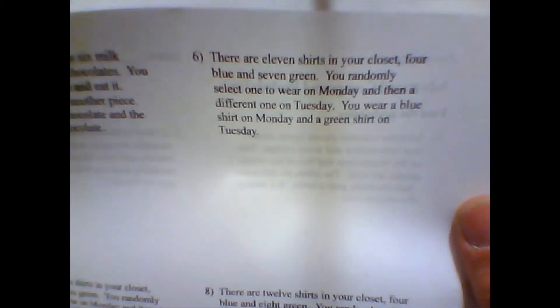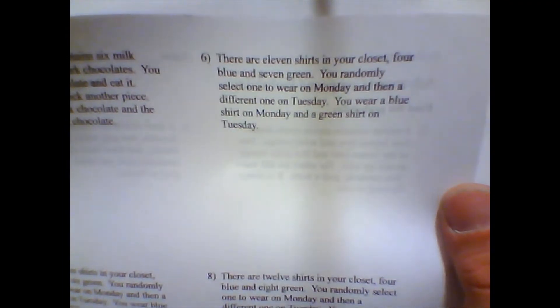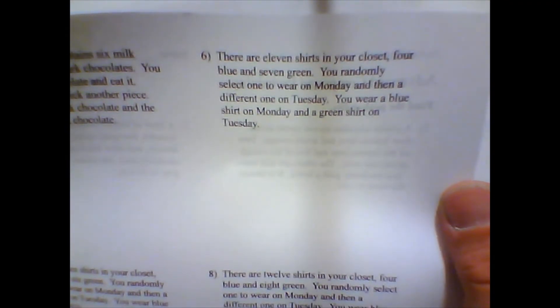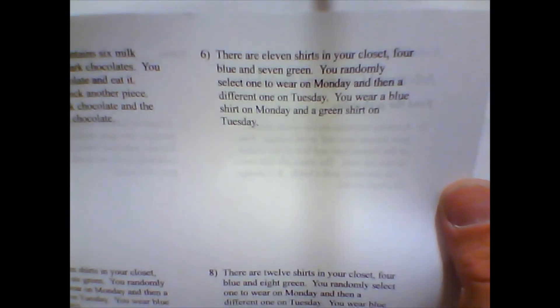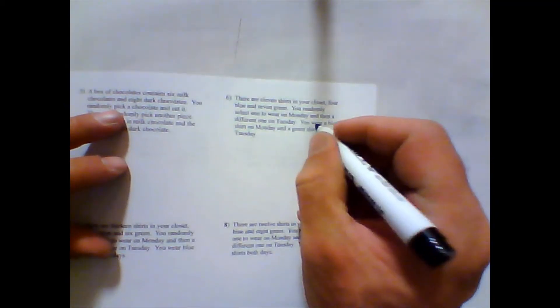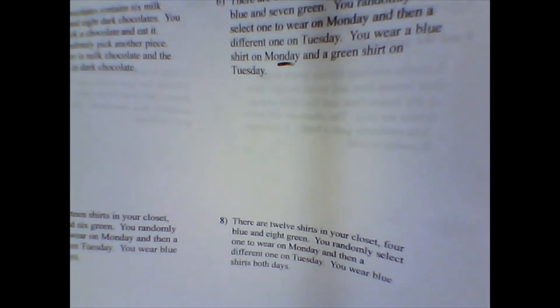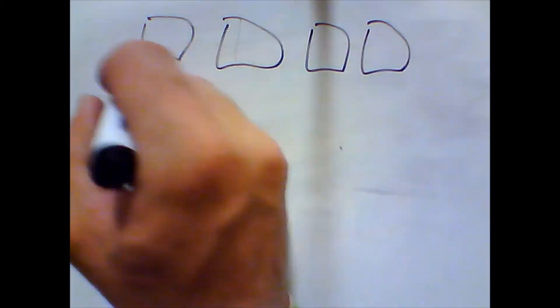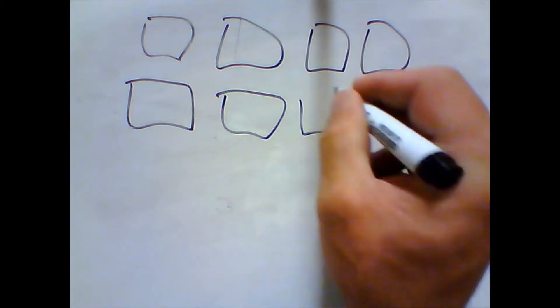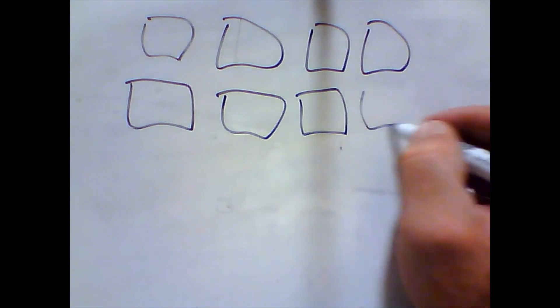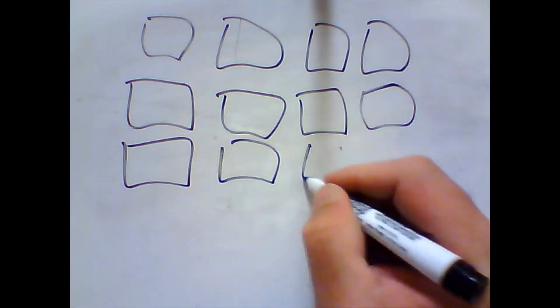There are eleven shirts in your closet — four blue and seven green. You only select one to wear on Monday and then a different one on Tuesday. You wore a blue shirt on Monday and a green shirt on Tuesday. Find the probability of that. So eleven shirts in my closet — I can't draw shirts so I'm going to make them boxes. One, two, three, four, five, six, seven, eight, nine, ten, eleven. Four blue and seven green.